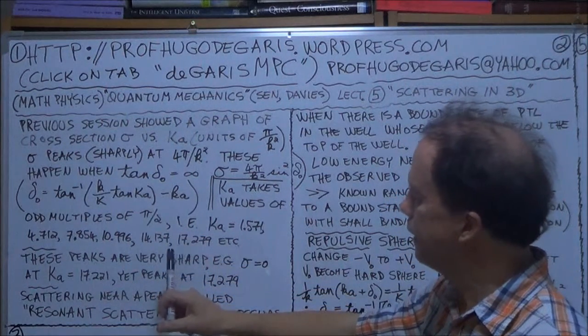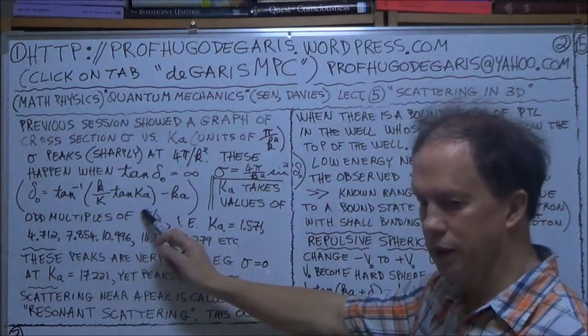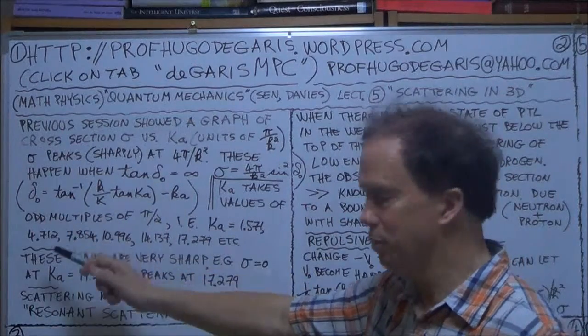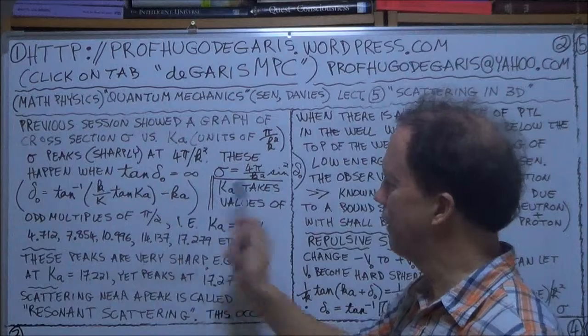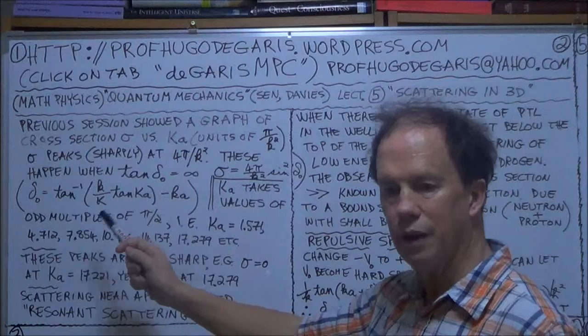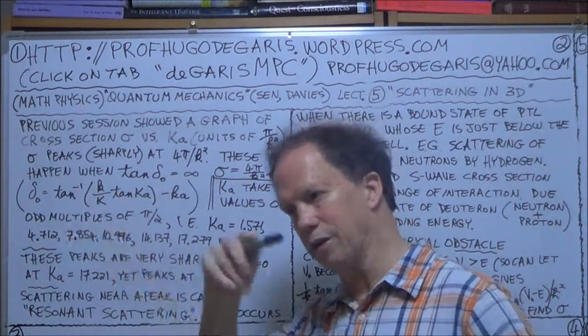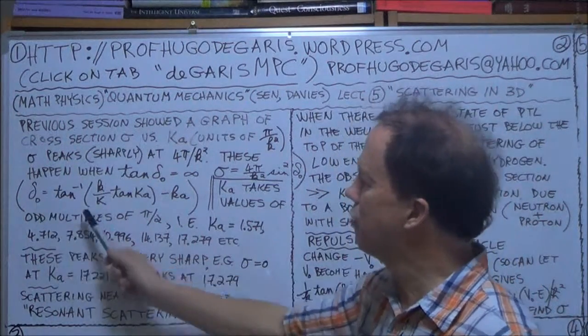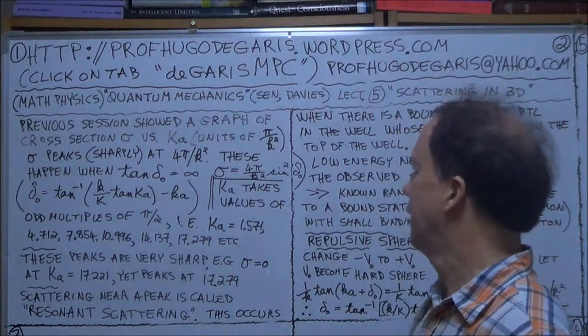Now, the arc tangent of infinity is pi over 2, or odd multiples of pi over 2. So your delta here, you can forget about this little Ka in comparison to, say, pi over 2. Pi over 2 is 3.14 something divided by 2. So this is much smaller. So effectively, delta 0 is roughly just odd multiples of pi over 2.